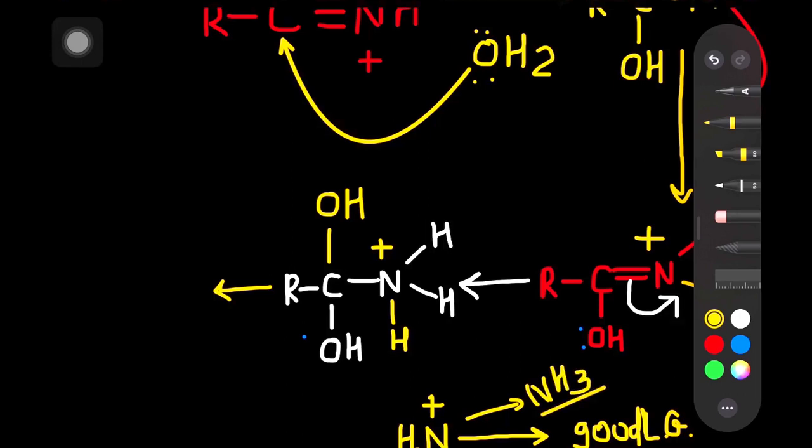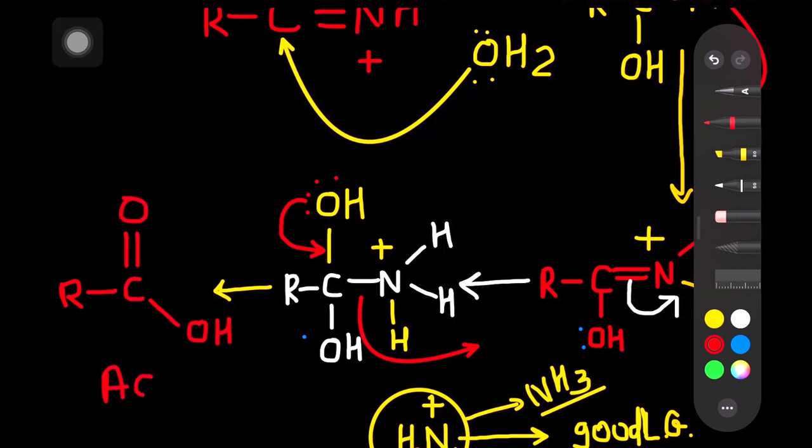NH3+ is a good leaving group. It can easily convert into NH3 ammonia. The nitrogen is removed with electrons and oxygen will give the electrons. Here OH, now this is the acid.